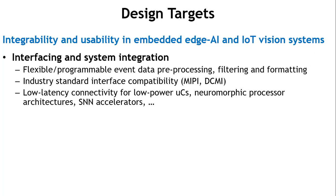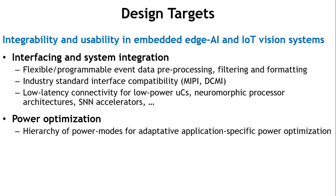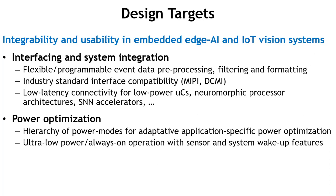Increasingly important are non-conventional compute platforms like SNN or neuromorphic processor architectures, for which very low latency connectivity and low power interfaces are critical. The second bucket is power optimization: edge systems live on batteries and need to be power efficient. The chip has a built-in hierarchy of power modes including ultra-low-power always-on modes with wake-up features, on-chip power management, and an embedded microcontroller to improve flexibility and usability at the edge.